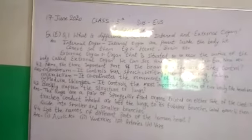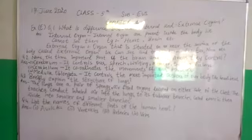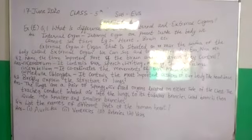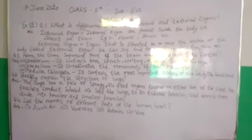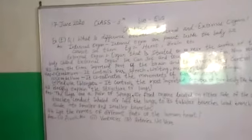Second, external organs. Organs that are situated near the surface of the body are called external organs. We can see and touch them. Example: ear, nose, etc.